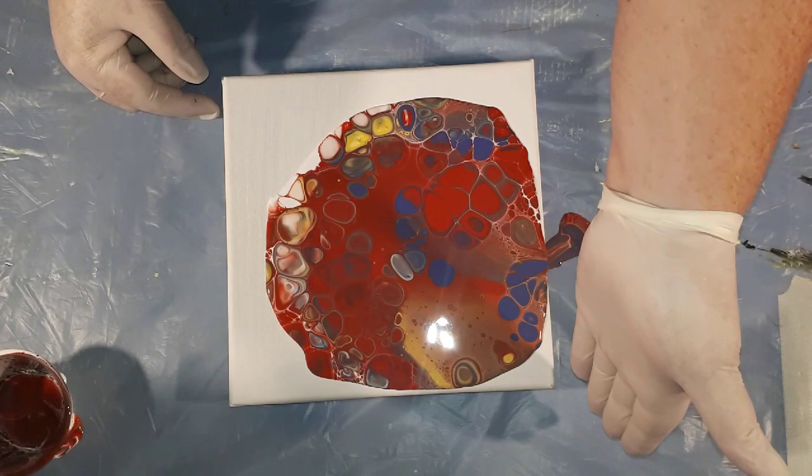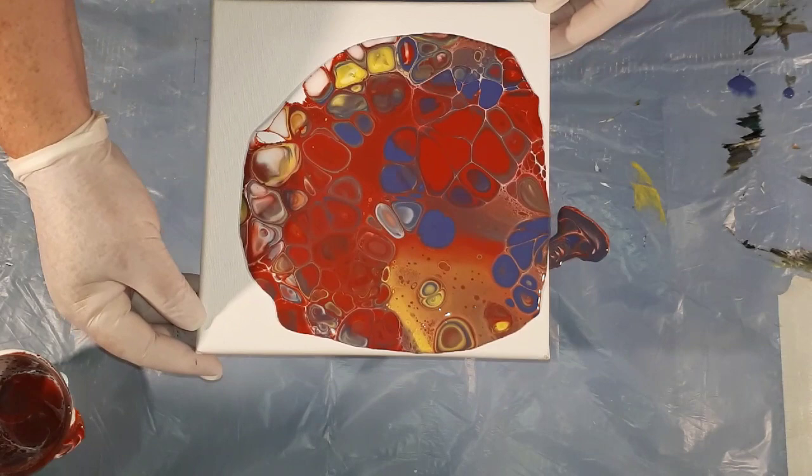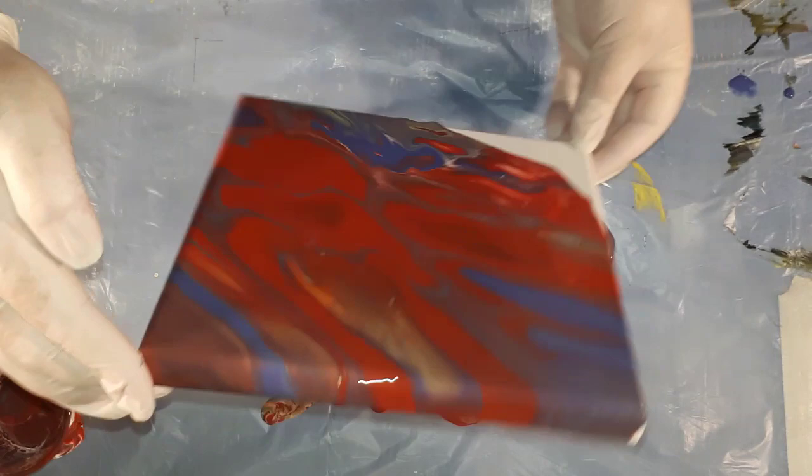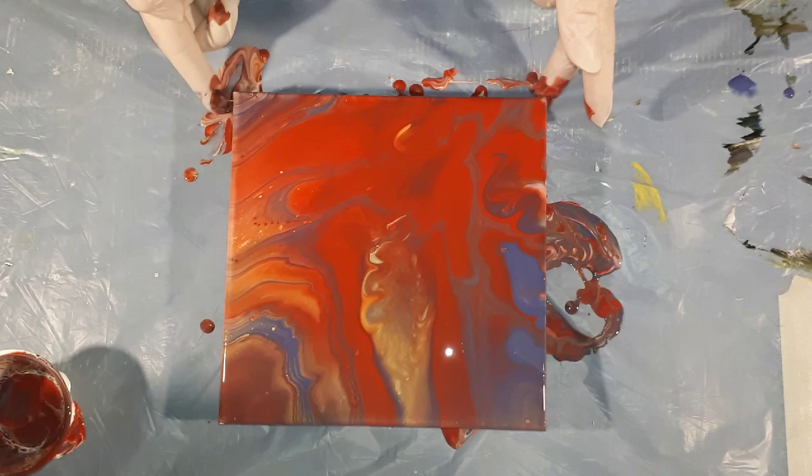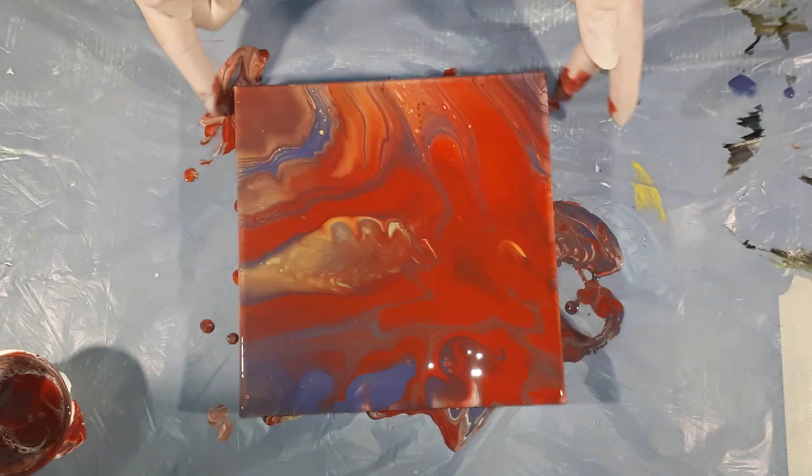So, because we're closest to this corner, I'm going to tilt this way first. Then I'm going to come here, back here, and back here. So, it's like going in one circle. Go straight over. Sorry. Just get these corners covered.